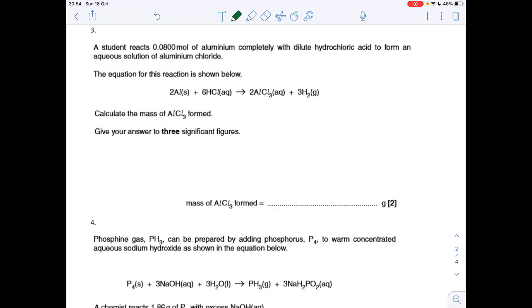The next question is a reactant mass question. We've got to calculate the mass of aluminium chloride formed from this reaction from 0.08 moles of aluminium. The mole ratio between the aluminium and the aluminium chloride is just 1 to 1, so it's going to produce 0.08 moles of AlCl3.